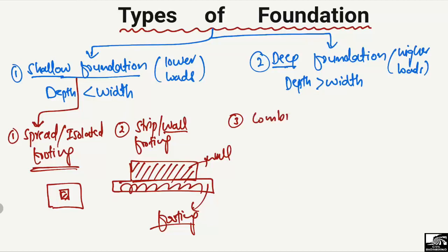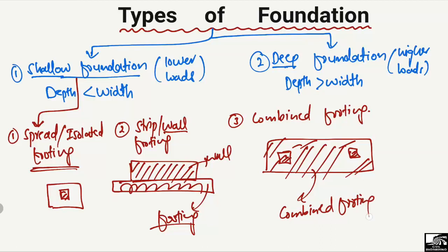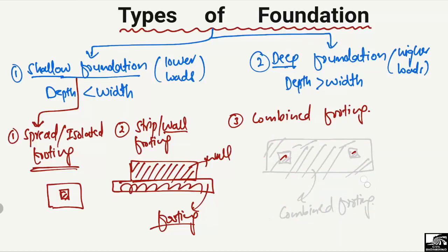The third type of shallow foundation is the combined footing. In this case, if we consider two reinforced concrete columns, sometimes we don't provide individual foundations for each — like isolated or spread footings. Instead, we provide the footing together for both columns, and this is known as the combined footing because the foundation is provided to both columns together.